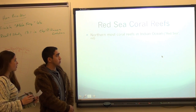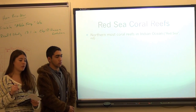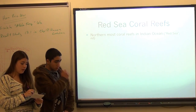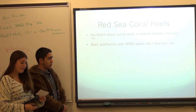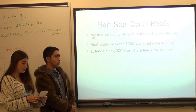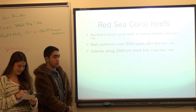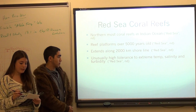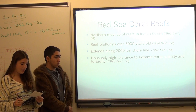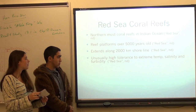Three reefs I chose to focus on: first, fringing reefs in the Red Sea. The Red Sea is the northernmost area of the Indian Ocean that has coral growth. Fringing reef platforms there are over 5,000 years old. The entire coastal reef complex extends along some 2,000 kilometers of shoreline. Corals in the Red Sea have developed an unusually high tolerance to extreme temperatures, salinity, and occasional turbidity — conditions that would be lethal to corals elsewhere.